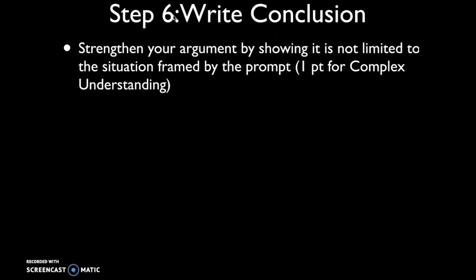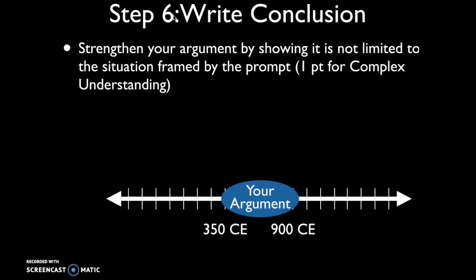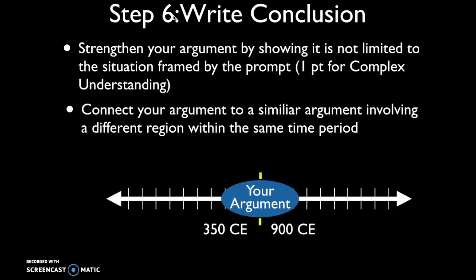The next step is to write a conclusion. In your conclusion, you should strengthen your argument by showing it is not limited to the situation framed by the prompt. You can score one point for complex understanding if you do this — perhaps through some kind of connection. We describe this as establishing a connection. You can connect your argument to a similar argument involving a different region within the same time period. For DBQs that are region-specific, like this one dealing with the spread of Buddhism to China and East Asia, you need to consider whether a cross-regional connection applies.